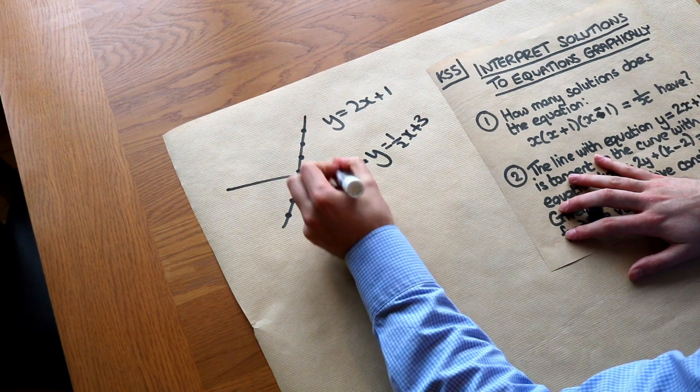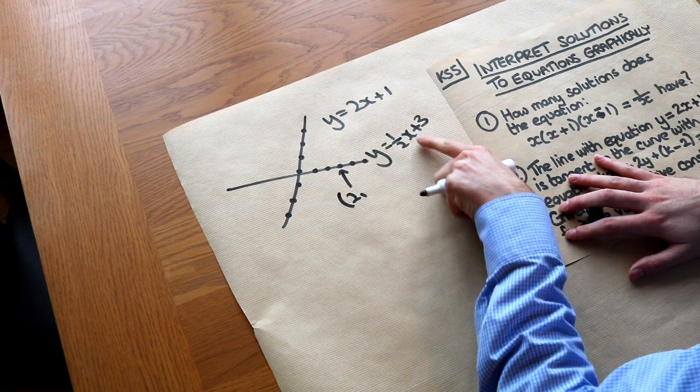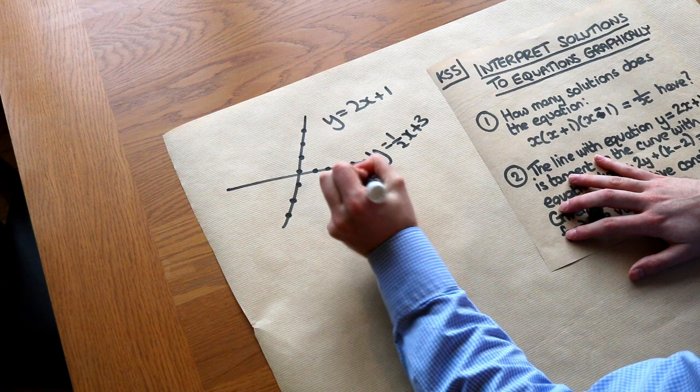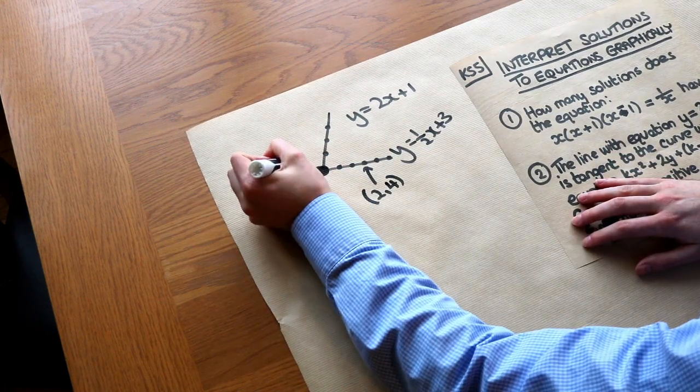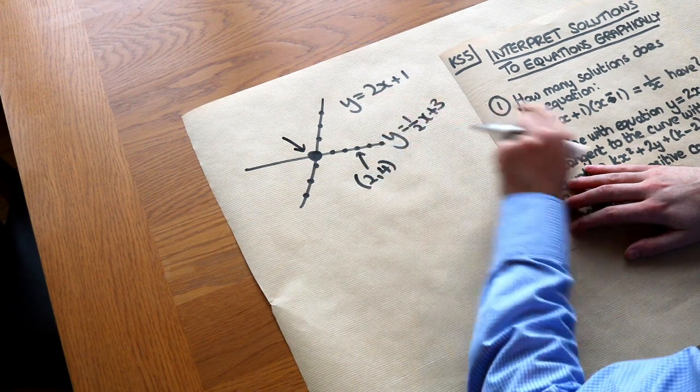So for example, if this x value was 2, then the y value in order to satisfy this equation would have to be half times 2 plus 3, which is 4. And that means if you're on the point of intersection of these two lines, it must satisfy both of the equations.